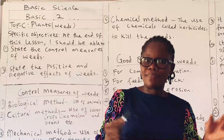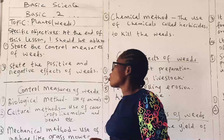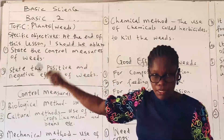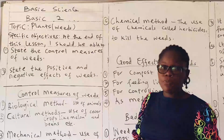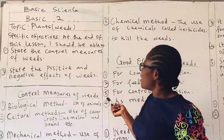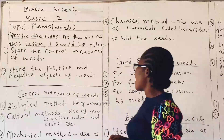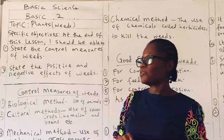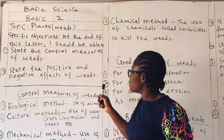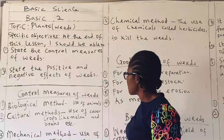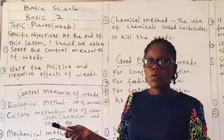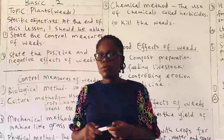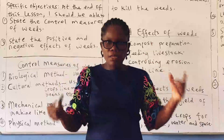This is the second part of this class for this week. We are still on the topic weeds. A specific objective: at the end of this lesson I should be able to state the control measures of weeds — that's the first part. And the second one is to state the positive and negative effects of weeds. Make sure you pay attention so that you go along with them.